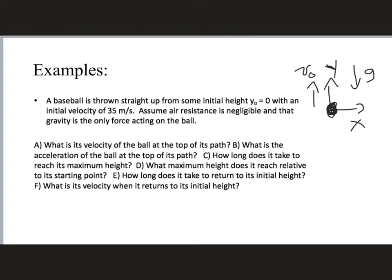Given that, the problem asks: what is the velocity of the ball at the top of its path? The ball is going to go up, stop for a moment, and then come back down. How fast is it going at the top? What is the acceleration of the ball at the top? How long does it take to reach maximum height? What maximum height does it reach relative to its starting point? How long does it take to return to its initial height? And what velocity does it have when it returns?